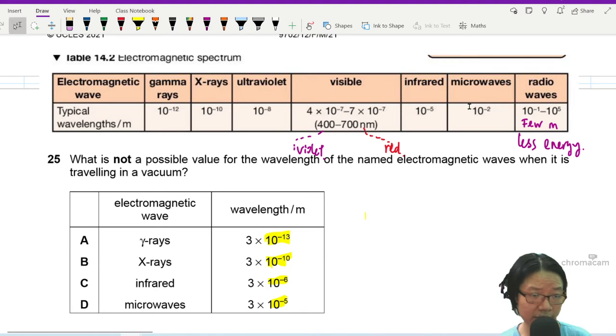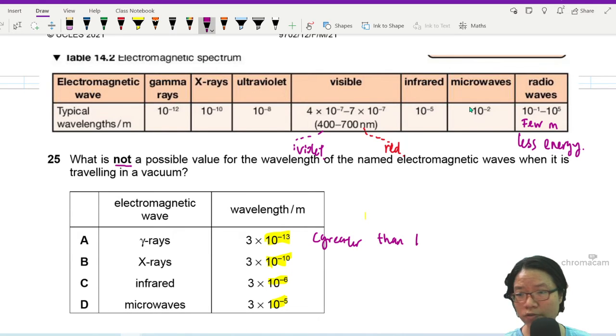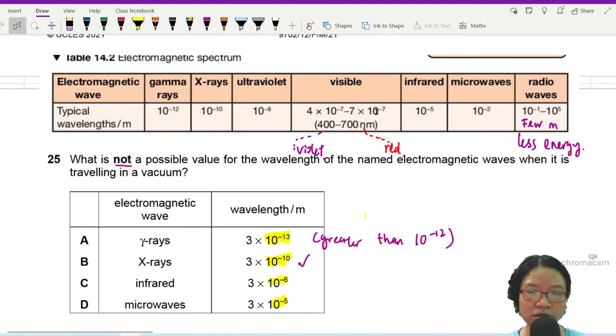Which one is not possible? Gamma ray is greater than 10 to the power of negative 12, so it's good. X-ray negative 10 is okay. Infrared being negative 6 - negative 6 is already close to visible light but not really yet.